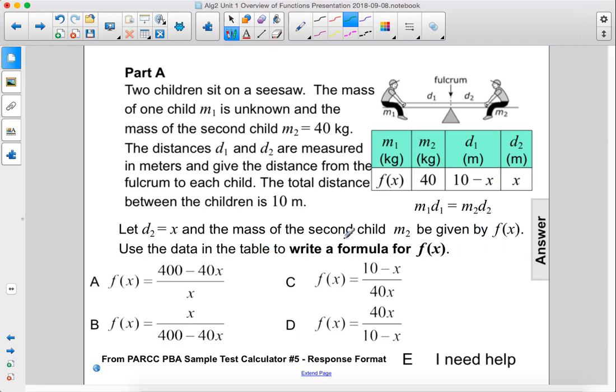Use the data in the table to write a formula for F of X. All right, so let's just use this format. M1 is F of X, D1 is 10 minus X. Set that equal to 40 times X.